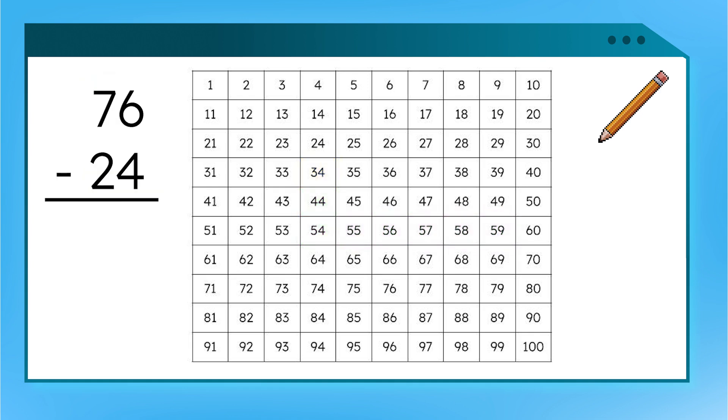Great work! Let's try a subtraction problem. 76 minus 24. Which number should we find on our hundred chart to start? Nice work! We'll start at 76. Now remember, to subtract, we will move differently. How many 10s are in the number 24? Yes, 2.